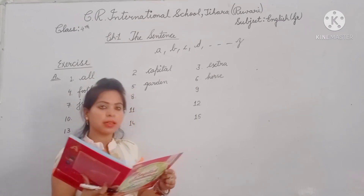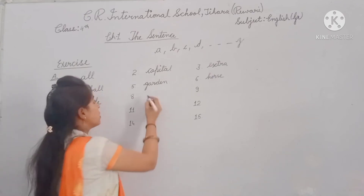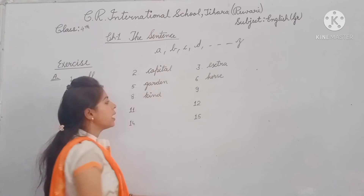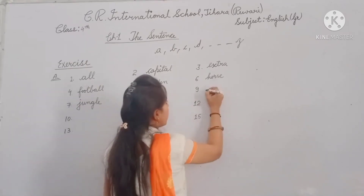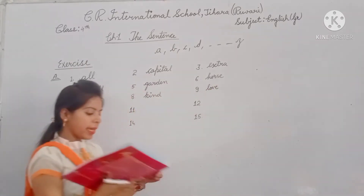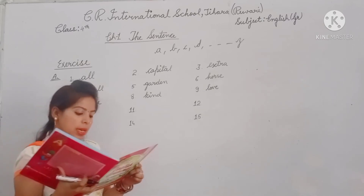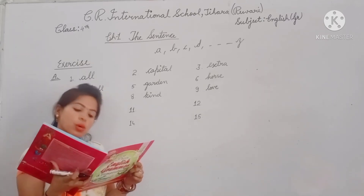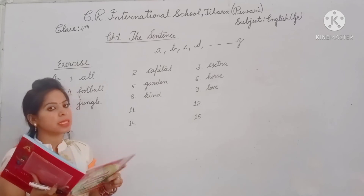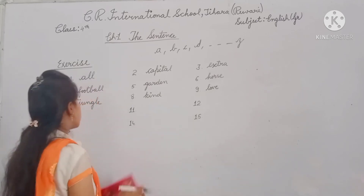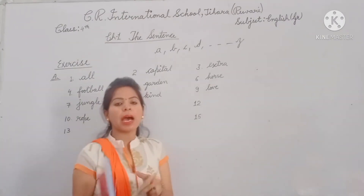After J comes K — we have 'Kind,' so at number 7 we write 'Kind.' Next comes L — we have 'Love,' so at number 8 we write 'Love.' Moving on, after M, N, O, P, Q, we come to R — we have 'Robe,' so we write 'Robe' at the next number.